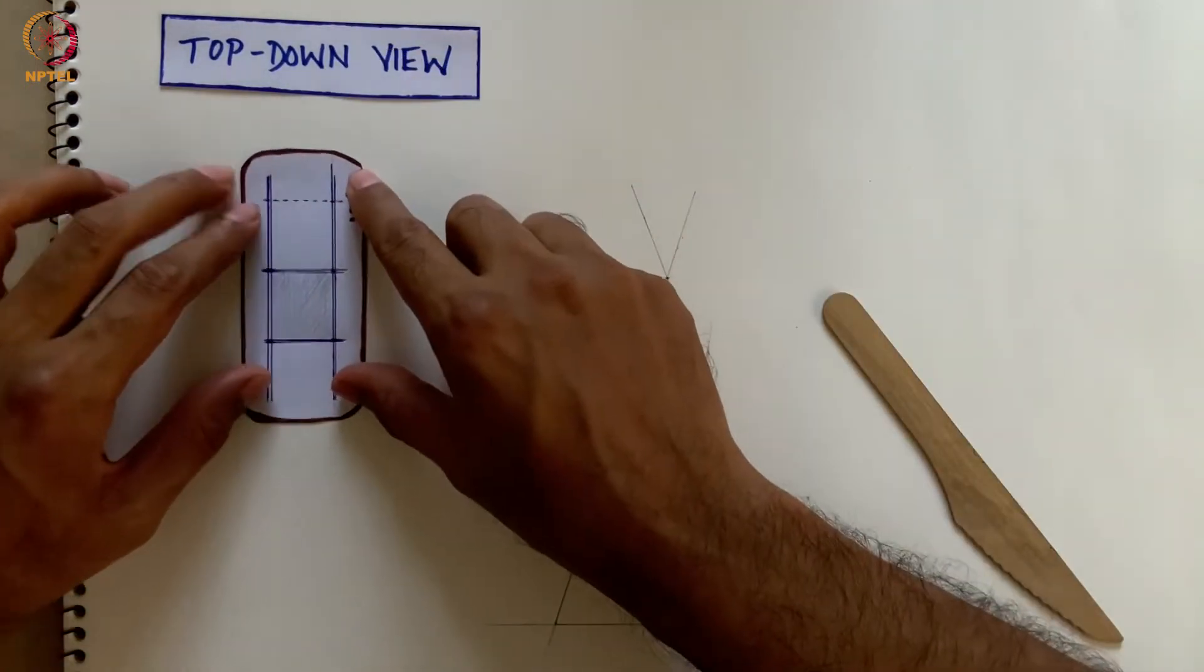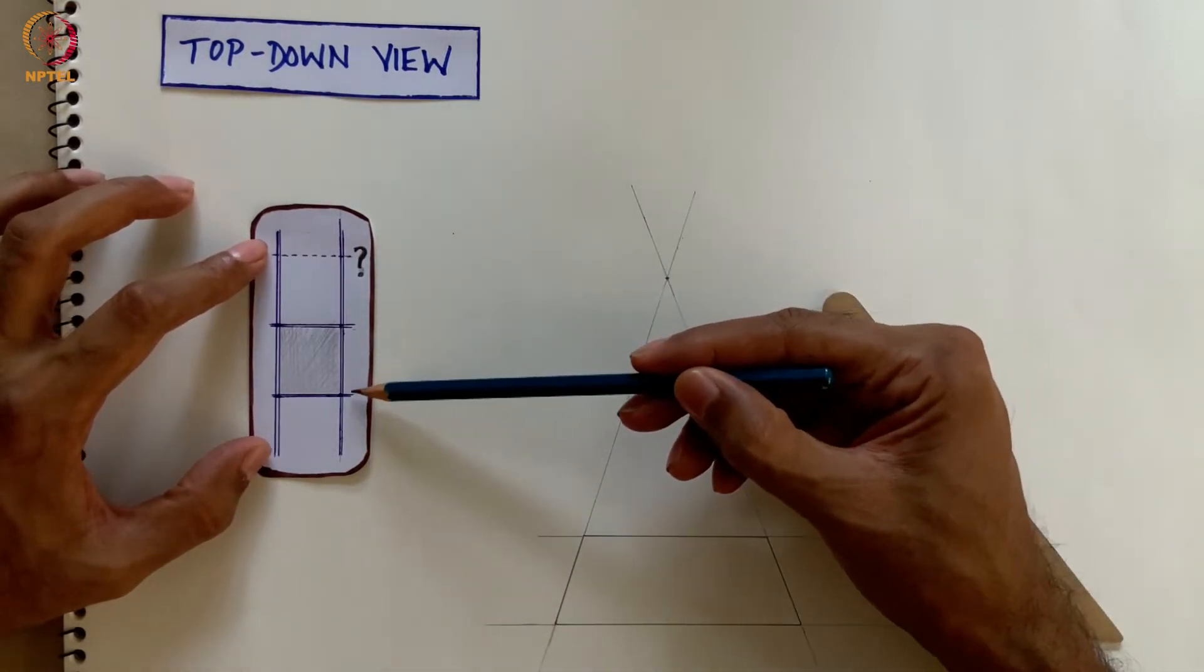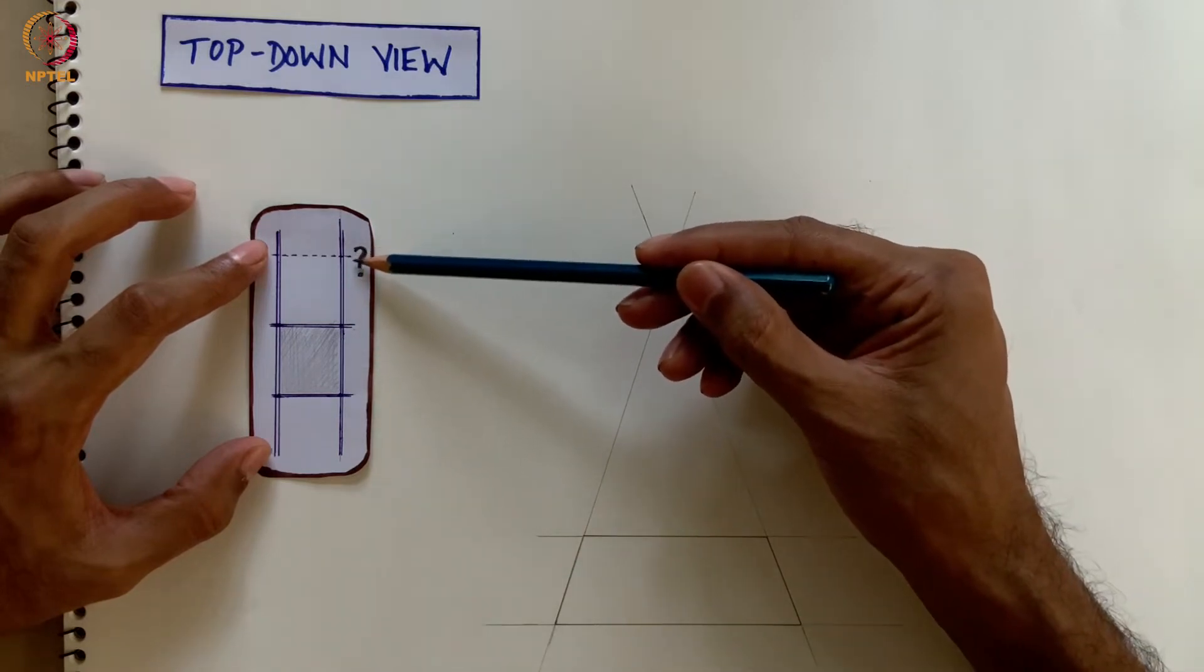It may be useful to look at a top-down view. As you can see, the tiles are evenly spaced, and our goal is to construct the next horizontal line.